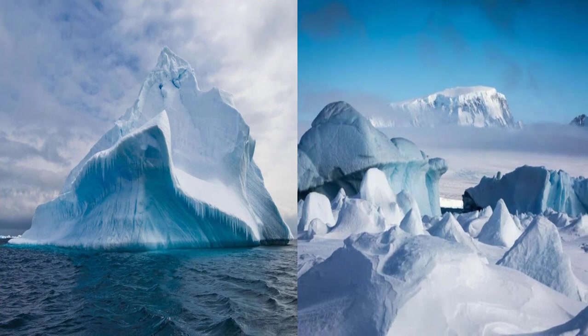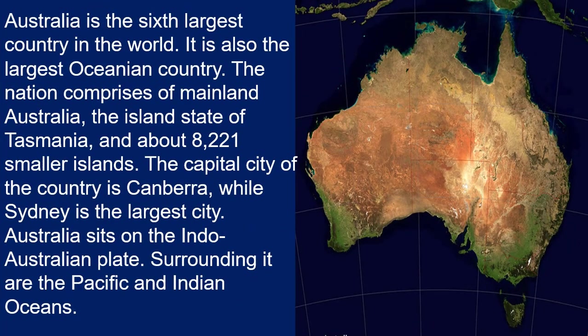Antarctica has beautiful snow-covered mountains and is a very beautiful continent. Australia is the sixth largest country in the world and also the largest ocean nation. It comprises mainland Australia, the island state of Tasmania, and about 8,221 smaller islands. The capital city is Canberra, while Sydney is the largest city. Australia sits on the Indo-Australian plate, surrounded by the Pacific and Indian Oceans.